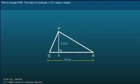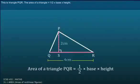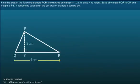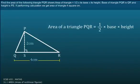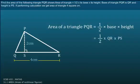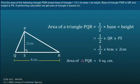This is Triangle PQR. The Area of a Triangle is equal to 1/2 into Base into Height. Find the Area of the following Triangle PQR. Area of Triangle is equal to 1/2 into its Base into its Height. Base of Triangle PQR is QR and Height is PS. While performing the calculation, we get Area of Triangle is equal to 4 square centimeter.